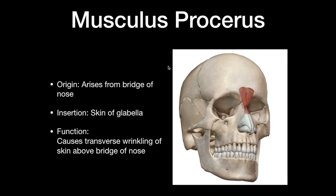The next muscle is musculus procerus. It arises from the bridge of the nose and inserts at the skin of the glabella. The function is that it causes transverse wrinkling of the skin above the bridge of the nose.